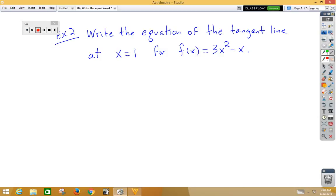We already know our x value is 1. To get our y value, we're going to do f of 1. So that would be 3 times 1 squared minus 1, which would give us a y value of 2. So we're going to put a 2.